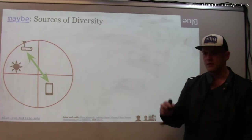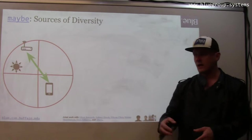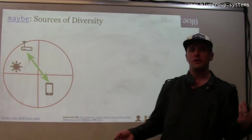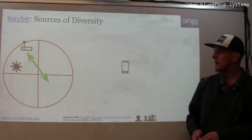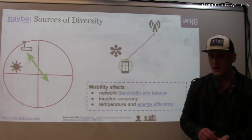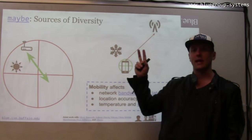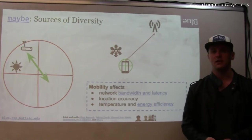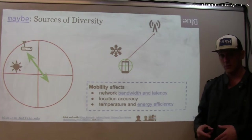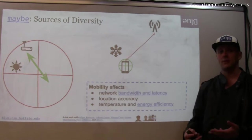For example, a device starts off inside where it has an inaccurate location, a good Wi-Fi connection, and it's in a fairly warm environment, which affects energy efficiency and heat generation and other things. Then suddenly you put it in your pocket, wander outside, and now the device has a more accurate location because it's using GPS. It's in a colder environment, which can be better for energy efficiency, and it has a weak link to some sort of LTE or 3G base station. These changes are happening all the time due to well-understood effects of mobility — how mobility affects network quality, sensor accuracy, and in certain cases temperature and energy efficiency.